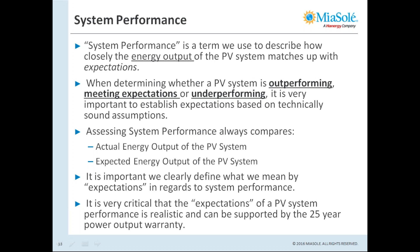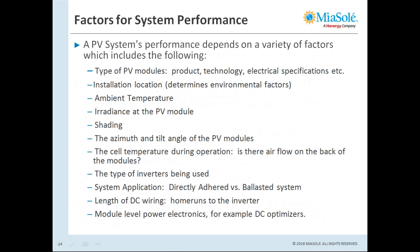When talking about system performance, what are we really talking about? System performance refers to how well the system is producing energy. To understand whether a system is outperforming, meeting expectations, or underperforming, you need something to compare the actual energy output at the site with an expectation. Coming up with that expectation is critical to assess system performance. Since absolute power varies over time based on different conditions, there are a wide number of factors that can impact system performance.